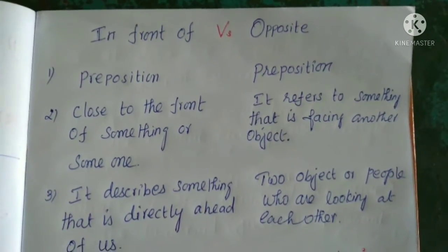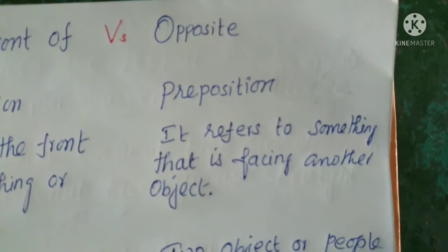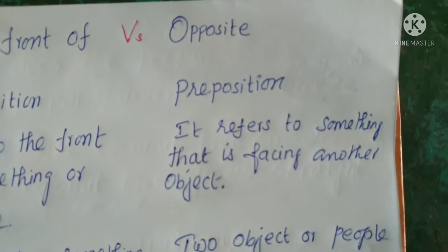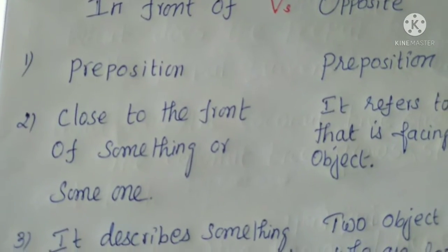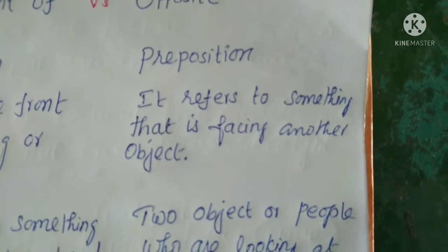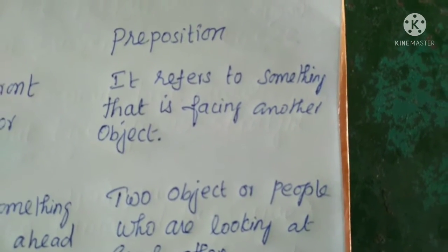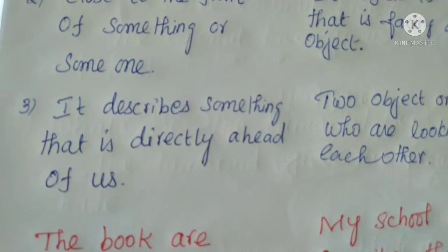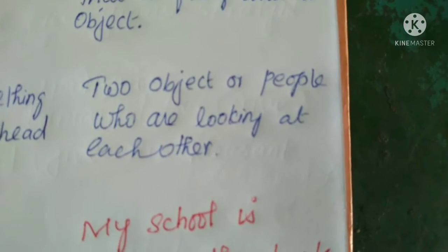It is very important. 'In front of' means close to the front of something or someone. 'Opposite' means it refers to something that is facing another object from the opposite side. It describes something directly against us — two objects or people who are looking at each other. We use 'opposite' in that case.